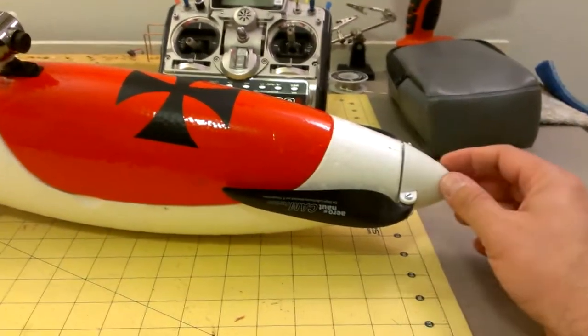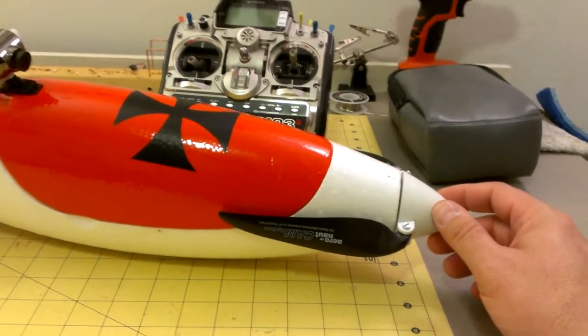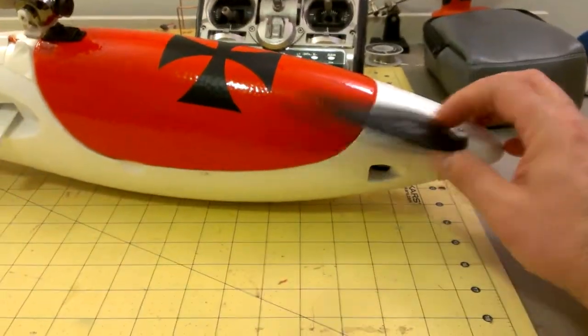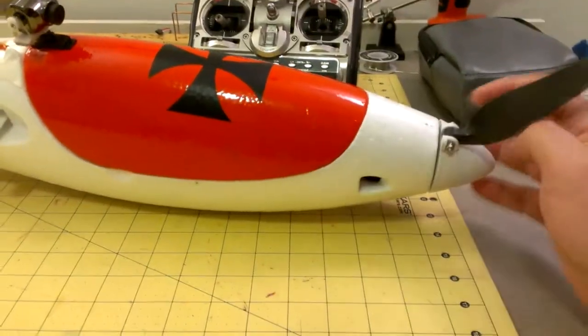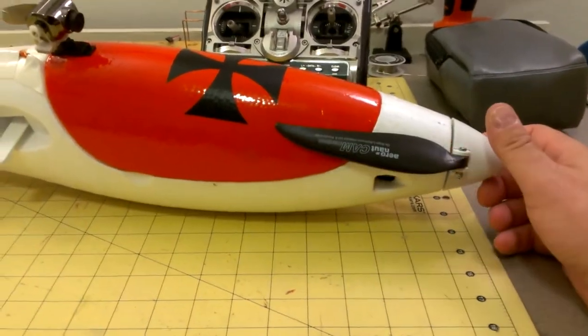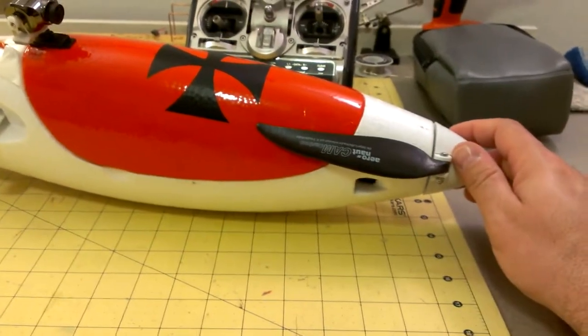The other thing is I bought a cheap set of folding props for it that were really noisy, not very efficient at all. So I went back and got a decent set of carbon fiber 12x6.5 that are so much nicer. They're so much more quiet. They're so much more efficient.